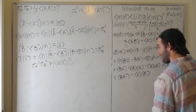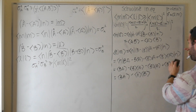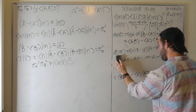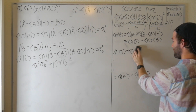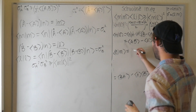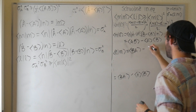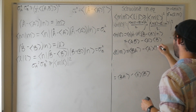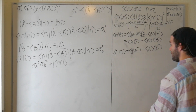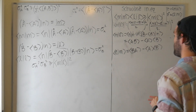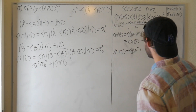So we get ⟨m|l⟩ = ⟨AB⟩ − ⟨B⟩⟨A⟩, and ⟨l|m⟩ = ⟨BA⟩ − ⟨A⟩⟨B⟩. There was a lot of algebra there — this derivation is exactly what drove me to drink.